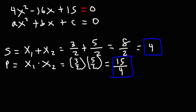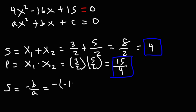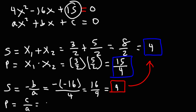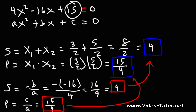Now let's verify using the formulas. The sum is negative b over a. b is negative 16 and a is 4, so we get negative times negative 16 over 4, which is positive 16 over 4, equal to 4 — matching our earlier answer. The product is c over a: c is 15 and a is 4, giving 15 over 4 — again matching. Both answers confirm.